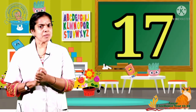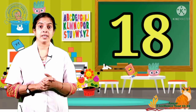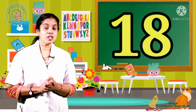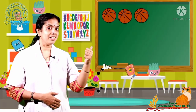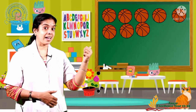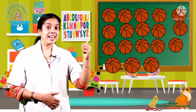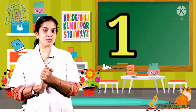Then which number comes after 17? It is 18. Now let's count 18 balls. 1, 2, 3, 4, 5, 6, 7, 8, 9, 10, 11, 12, 13, 14, 15, 16, 17. Yes, 18.